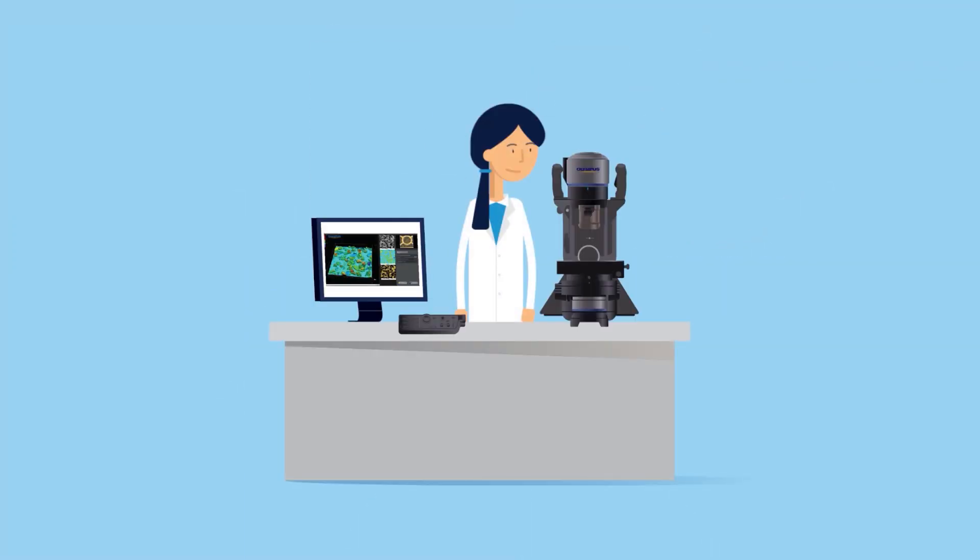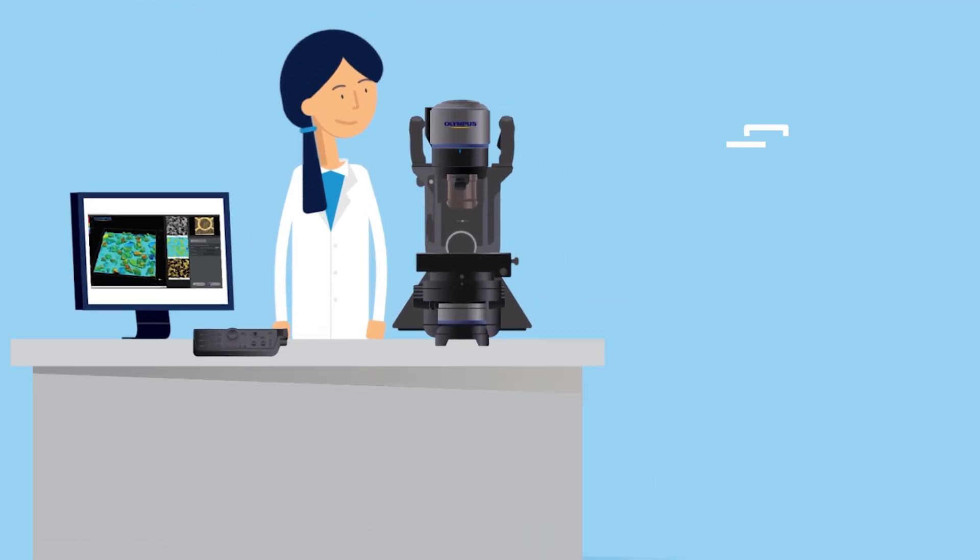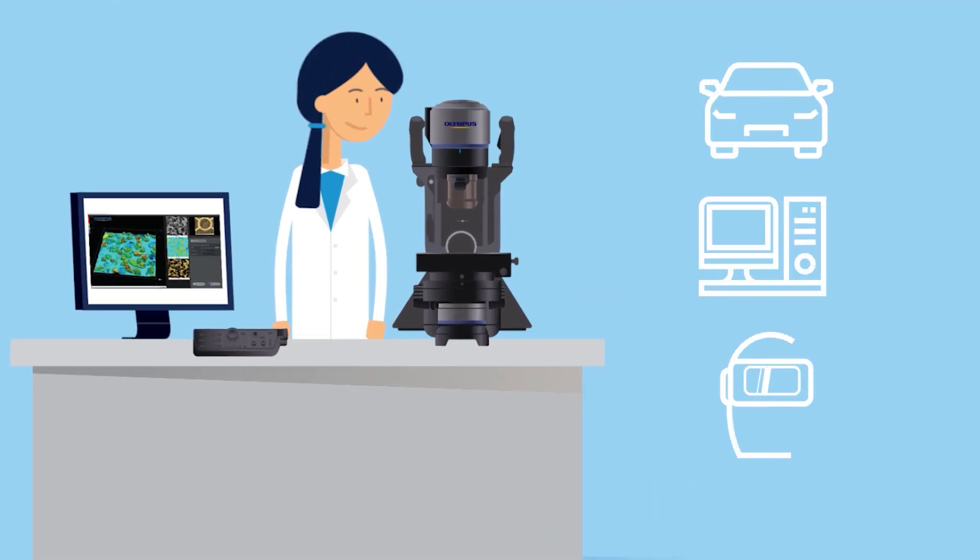The DSX-1000 Digital Microscope from Olympus is the ideal inspection tool for material science, manufacturing and industrial applications. From inspecting automotive parts to electronics and metal fabrication, this flexible tool combines outstanding optical quality with ease of use.